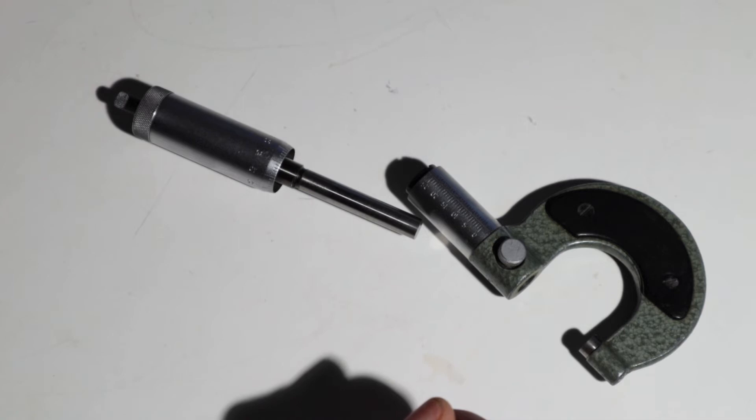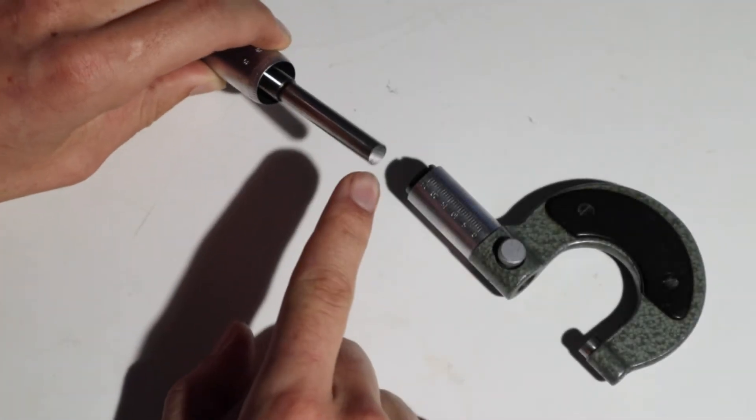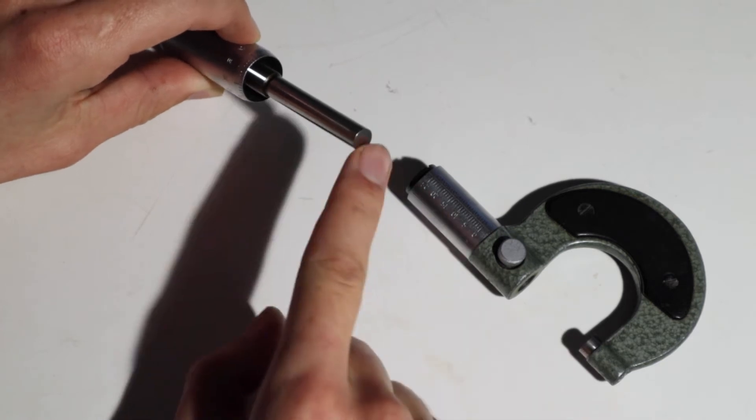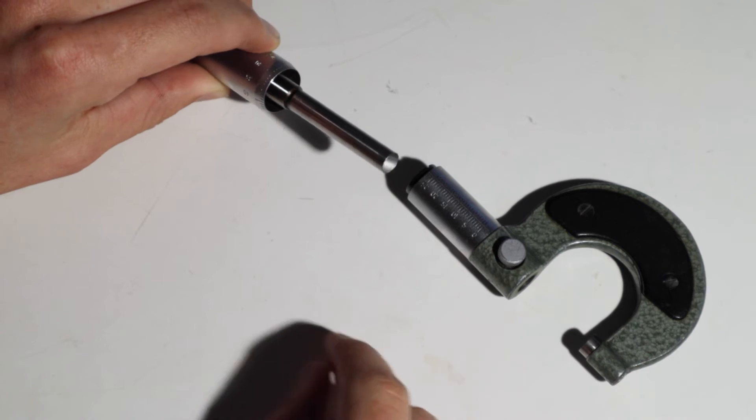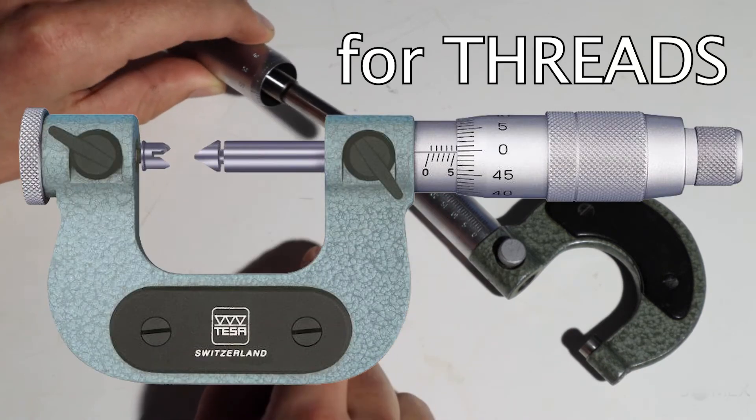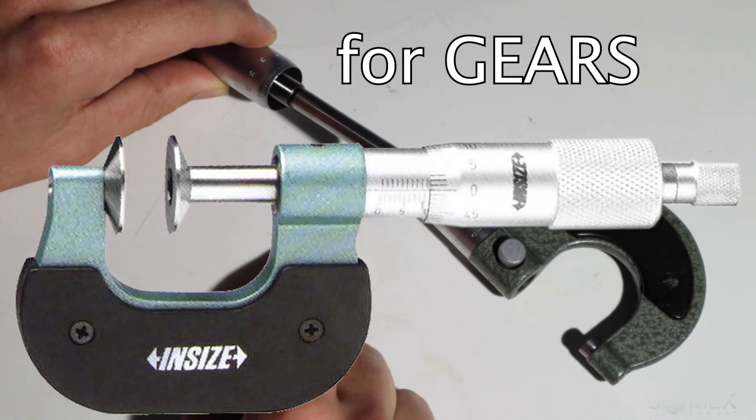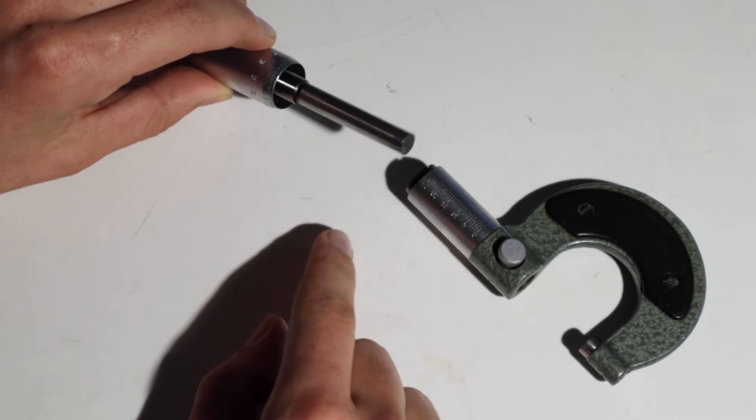All right when we are here we can see the measuring phase as well. We've got two measuring phases and this is the most basic one. There are different ones especially made for measuring threads or gears for example but this is the most basic one and probably the one you are going to come into contact with.